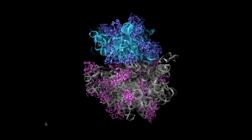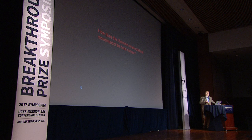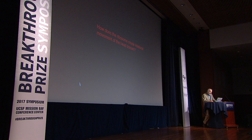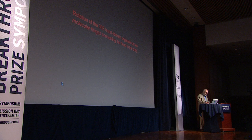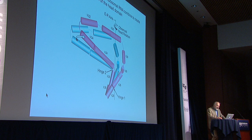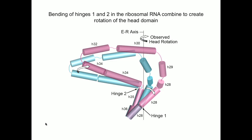So how does the ribosome create rotational movement of this head domain, which is one of the most fundamental molecular movements in life? It turns out that rotation of the head domain originates at two molecular hinges connecting the head to the body in the small subunit. One hinge is down here — hinge one. In the non-rotated state, helix 28, which makes up hinge one, is kinked.